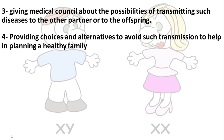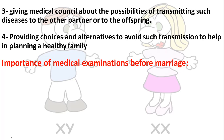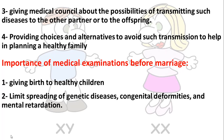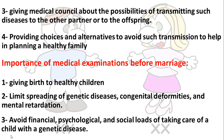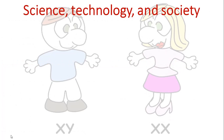Medical examination before marriage also provides choices and alternatives to avoid disease transmission and helps in planning a healthy family. The overall importance is to give birth to healthy children, limit the spread of genetic diseases and congenital deformities, and limit mental retardation. These diseases can also cause financial, social, and psychological burden when caring for children with genetic diseases.